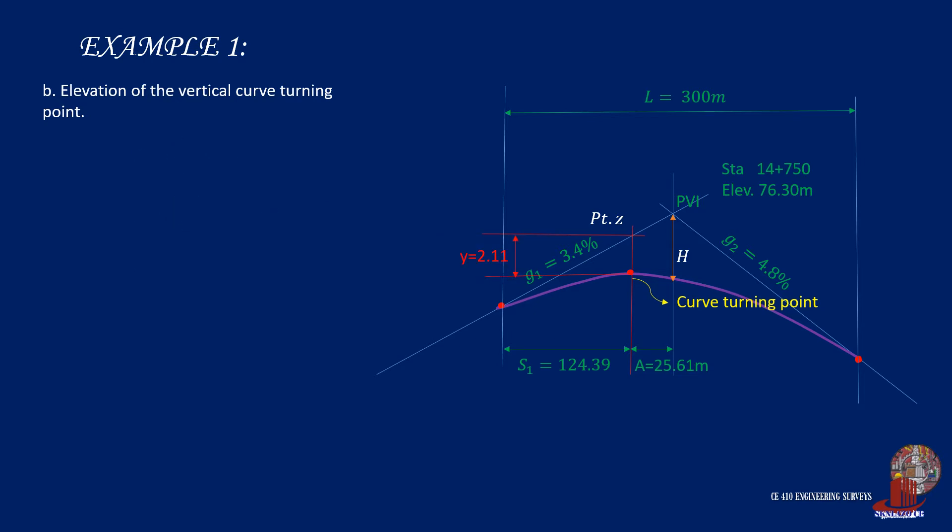To take the elevation of the tangent location, say we denote it as point Z, subtract the distance taken from the product of the grade with A, and that would be 76.3 less 0.034 multiplied by 25.61, which is 75.43. So we can take the elevation of the highest point of the curve by subtracting Y from this elevation, and that is 75.32 meters.